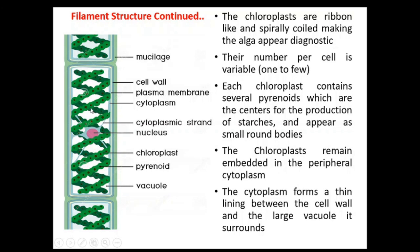In this cell there are two chloroplasts — you can see this long spirally coiled first chloroplast and another long spirally coiled chloroplast. The number of chloroplasts per cell can be one to a few. Each chloroplast contains several pyrenoids, which are the centers for production of starch, and they appear as small round bodies visible within the chloroplasts.